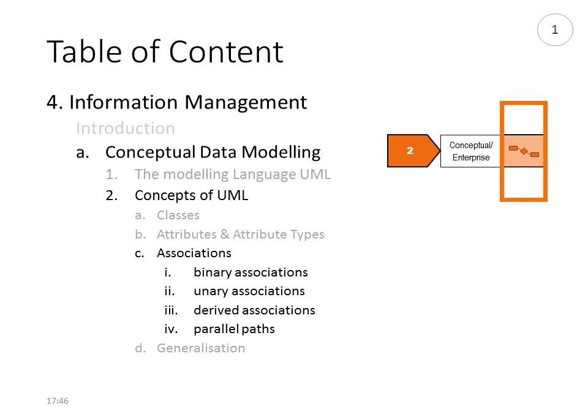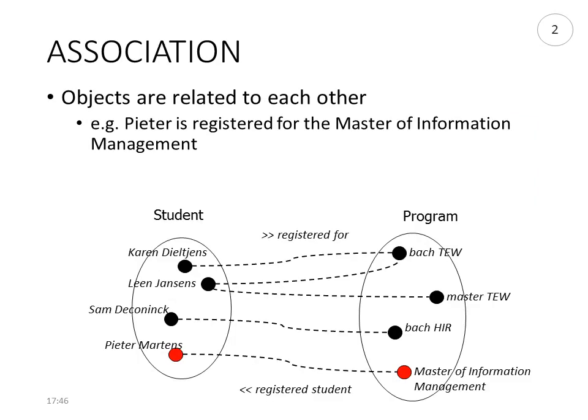The next construct we explain is the concept of an association. In reality, we see that the individual instances, the individual objects, are related to each other. For example, we see that the student Peter Martens is registered for the program Master of Information Management. So there's a relationship between Peter Martens and Master of Information Management.